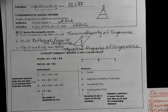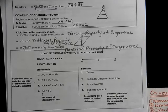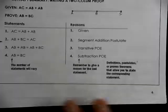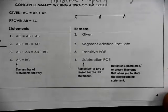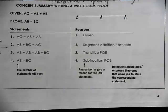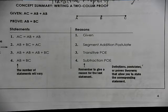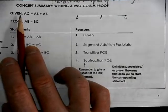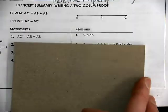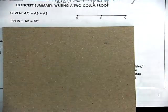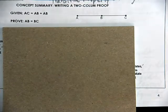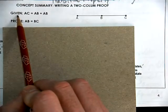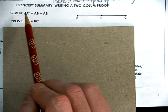Very similar to what we did yesterday, but yesterday was equality and today is congruence — same vocabulary. Now let's move to our first experience with a geometry proof. You always start with your given information. Don't worry about how the proof is put together yet — every single time you start a proof, you begin with the given information and look at your picture for that information.